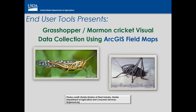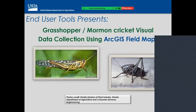My name is Jenny Sauer. Welcome to End User Tools presents Grasshopper Mormon Cricket Visual, the nationwide data collection using ArcGIS Field Maps. This training is going to cover the much-anticipated refreshed version. This Grasshopper Mormon Cricket in Field Maps is just a refresh of last year, so some of you may have collected data for Grasshopper Mormon Cricket in the past and even be familiar with this mobile application.